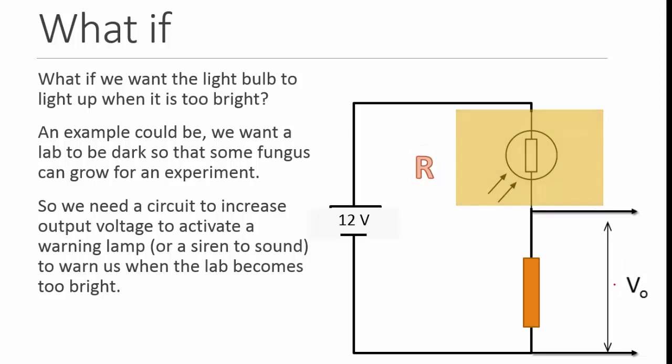So when it becomes too bright, what will happen is that this resistance becomes too small. And correspondingly, the Vo over the fixed resistance will get very big. And this will activate the light or warning light or the sound.